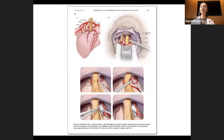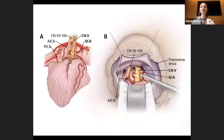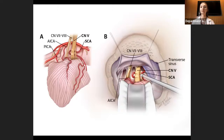For my final illustration, I chose to combine and render Figures 5, 6, and 7, formatted for journal publication. Here is an enlarged version of Figures A and B, depicting an orienting anatomical view and the surgeon's view. Figures C through F show the series of maneuvers that resolved the compression. Thank you, and I will now take any questions or comments.